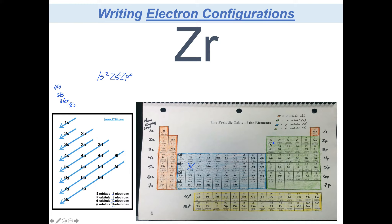That leaves 30 electrons to go — I've now filled through 2p. Reading like a book, after finishing that line I come down to 3s. S's can hold 2, leaving me 28 to go. I've just completed 3s, and now we come to 3p. P holds 6, leaving me 22 to go. I've gone through 1s, 2s, 2p, 3s, and just finished 3p.